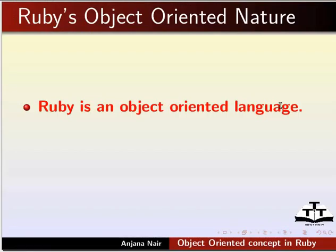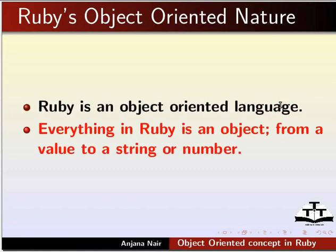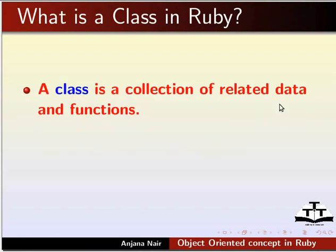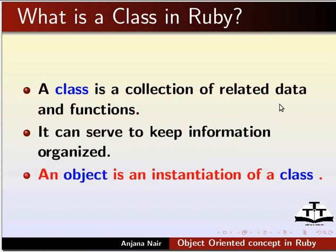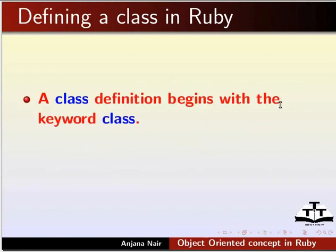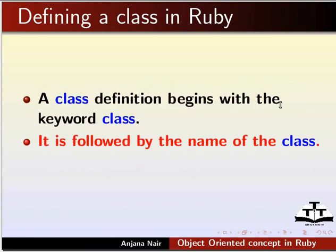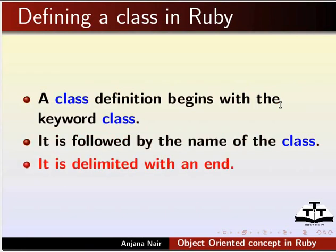Ruby is an object-oriented language. Everything in Ruby is an object, from a value to a string or number. A class is a collection of related data and functions; it can serve to keep information organized. An object is an instantiation of a class. A class definition begins with the keyword class, followed by the name of the class, and is delimited with an end.